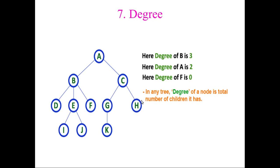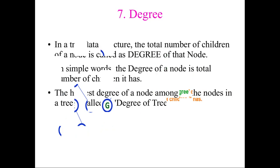Next we are going to see about degree. You can find the degree of any node. A node's degree is simply its number of children. For example, node A has two children B and C, so the degree of A is two. B has three children D, E, and F, so the degree of B is three. F has no children, so the degree of F is zero.